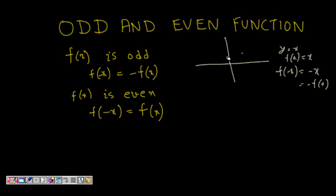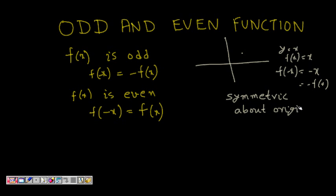What happens with an odd function? An odd function is symmetric about the origin. So f(x) = x, which is odd, is symmetric about the origin.